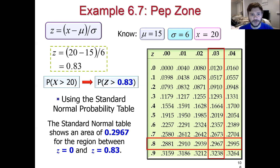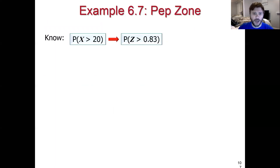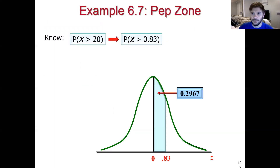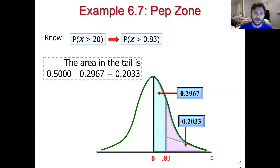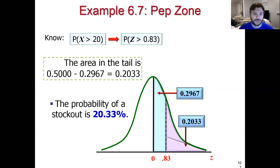That table value is between 0 and 0.83, but we're being asked an upper tail problem. The question asks what's the probability that Z is going to be greater than 0.83 — not between 0 and 0.83. So we're going to take that table value and subtract it from 0.5. That gives us 0.5 minus 0.2967, which is an upper tail probability of 0.2033. That would be interpreted as the probability of a stockout — of us not having stocked enough inventory to meet demand given that distribution.